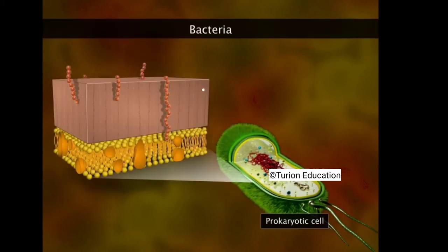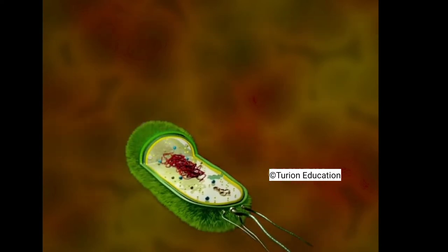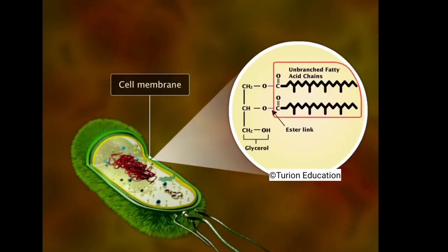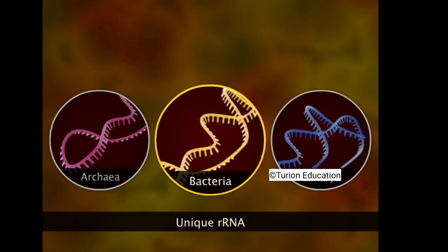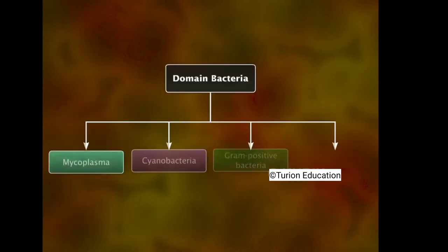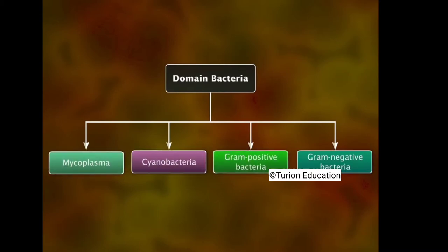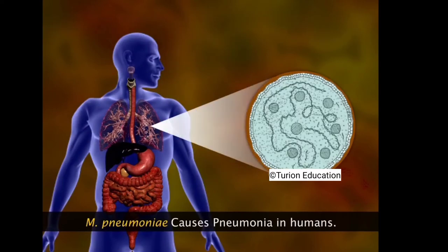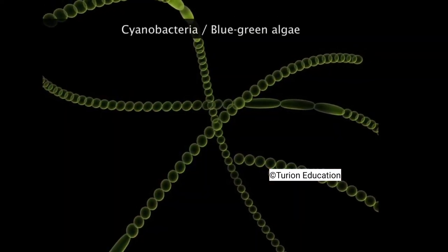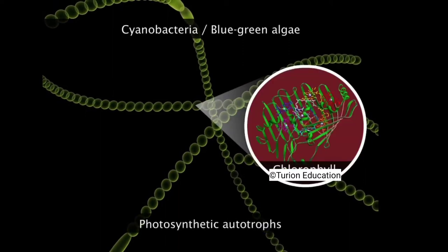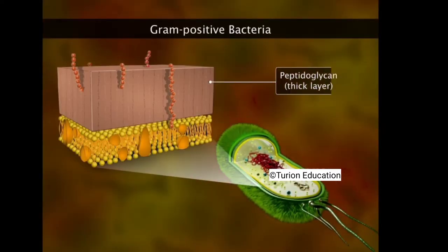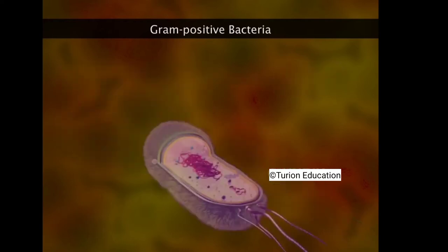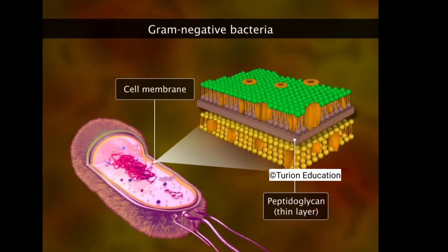Bacteria are prokaryotic cells with peptidoglycan in their cell walls. The cell membrane contains unbranched fatty acid chains attached to glycerol by ester linkages. Bacteria contain unique rRNA sequences distinctly different from those of archaea and eukarya. Domain Bacteria includes mycoplasmas, cyanobacteria, gram-positive bacteria, and gram-negative bacteria. Mycoplasmas completely lack cell walls and many species are pathogenic to humans. Cyanobacteria or blue-green algae contain chlorophyll and are photosynthetic autotrophs. Gram-positive bacteria contain a large amount of peptidoglycan, while gram-negative bacteria contain a thin layer.